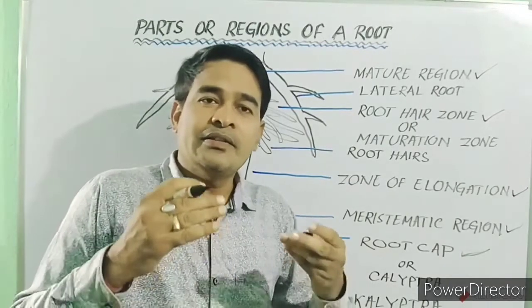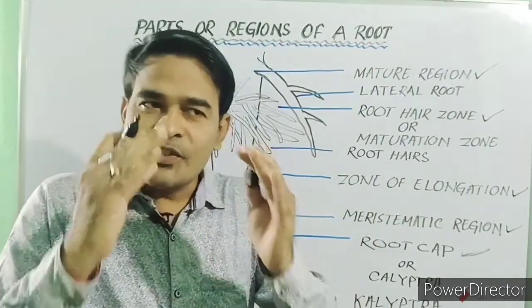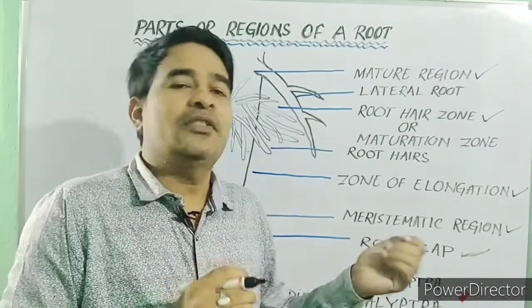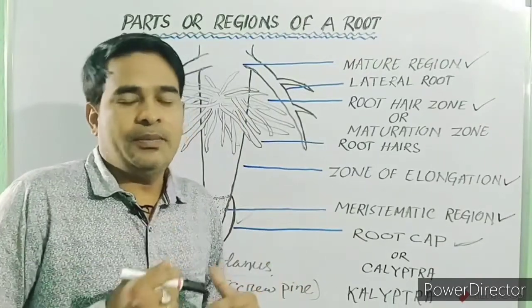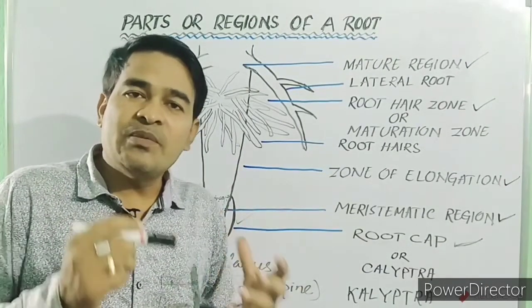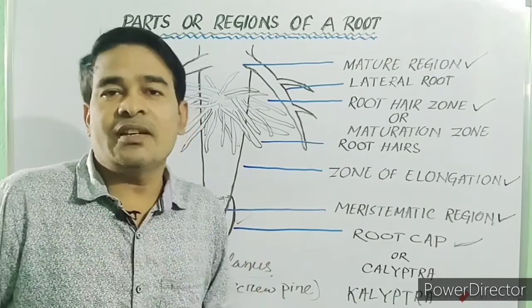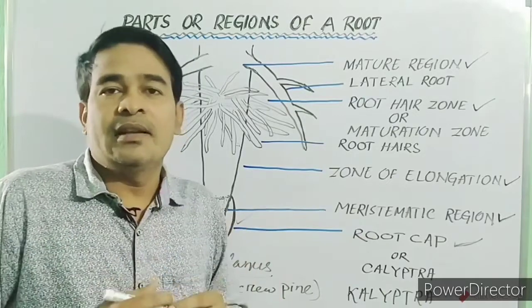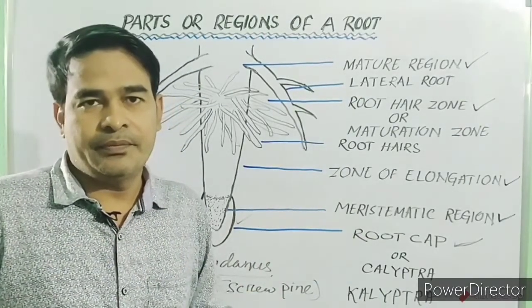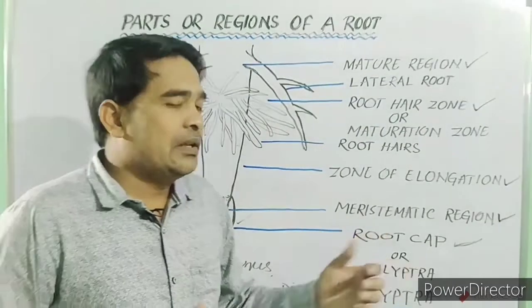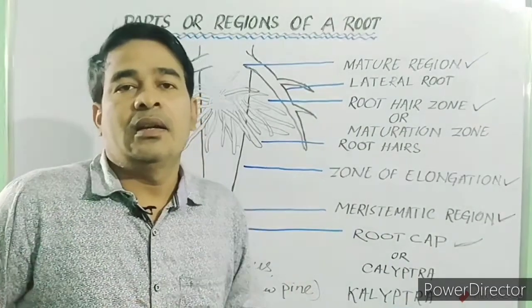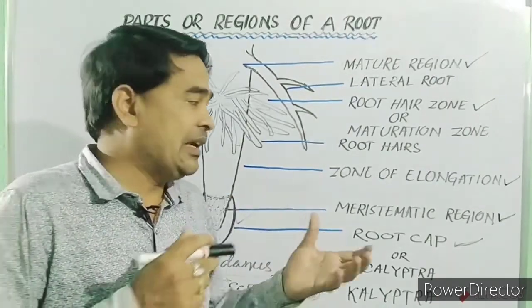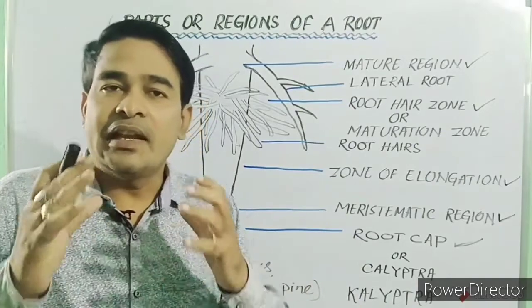And instead of root cap, a structure called root pocket is present in those plants. The function of root pockets is to keep the plant in a balanced position in water. So, they act as balancers. And unlike the root cap, the root pockets are not replaced. That means they cannot be repaired. If they are injured or broken, they cannot be repaired.